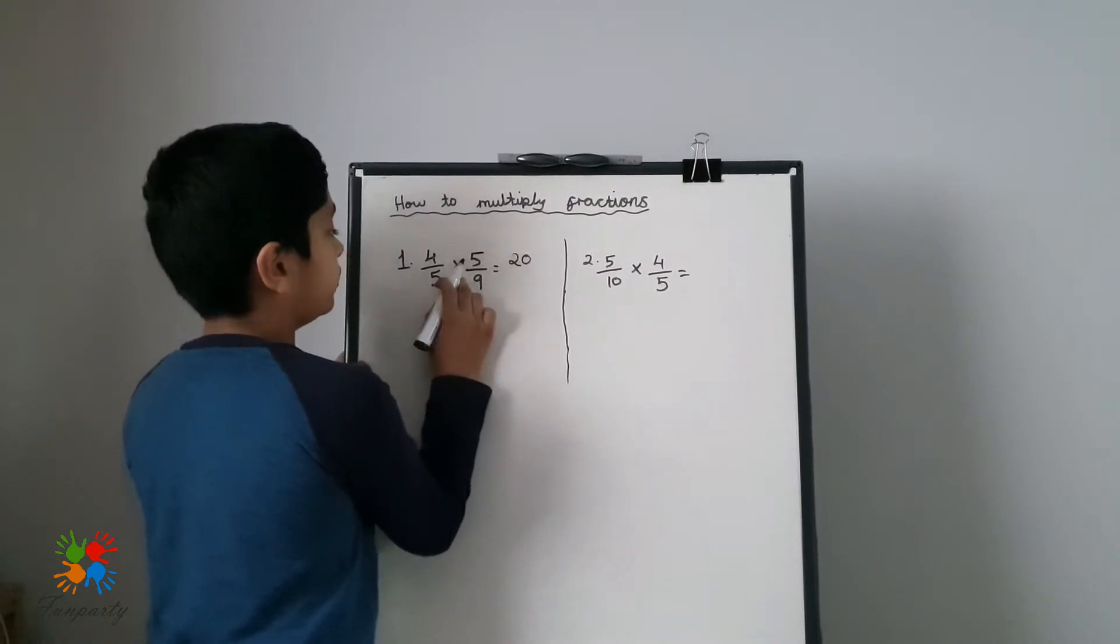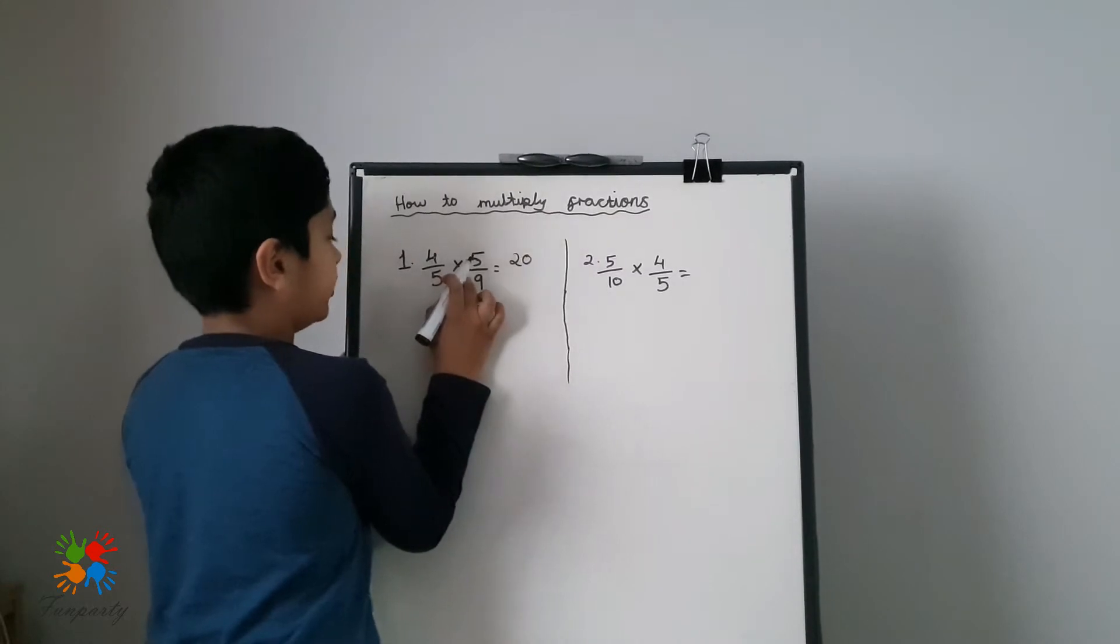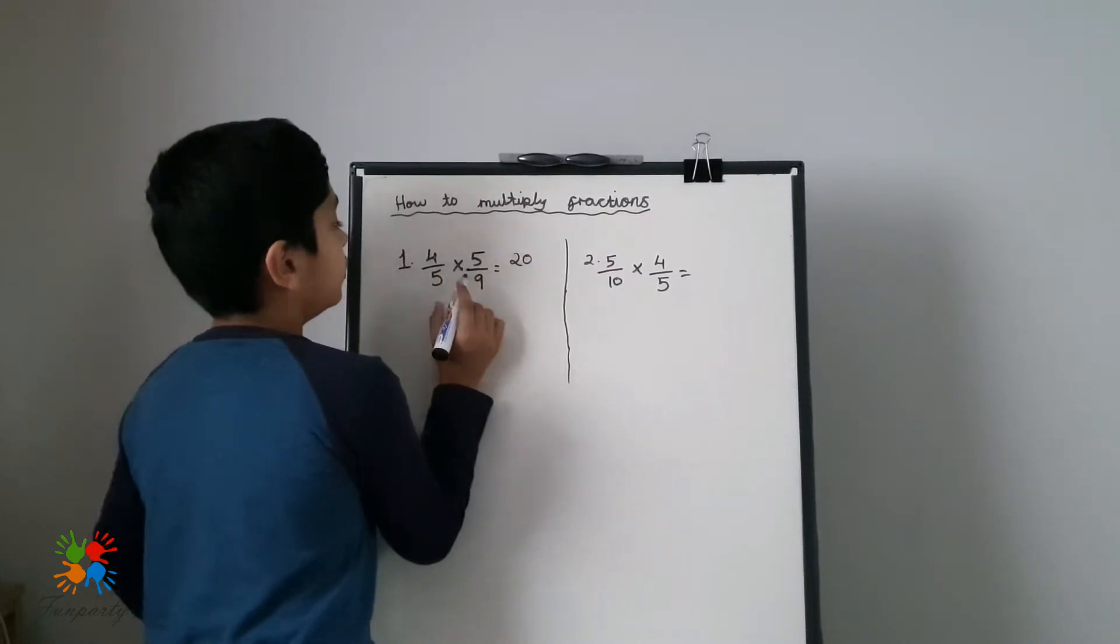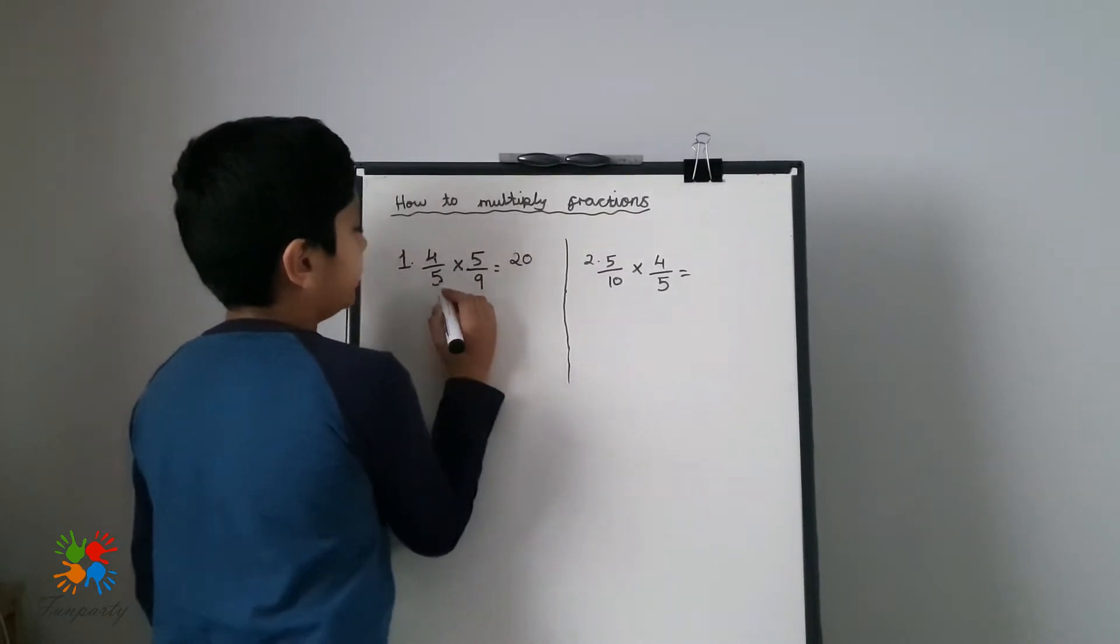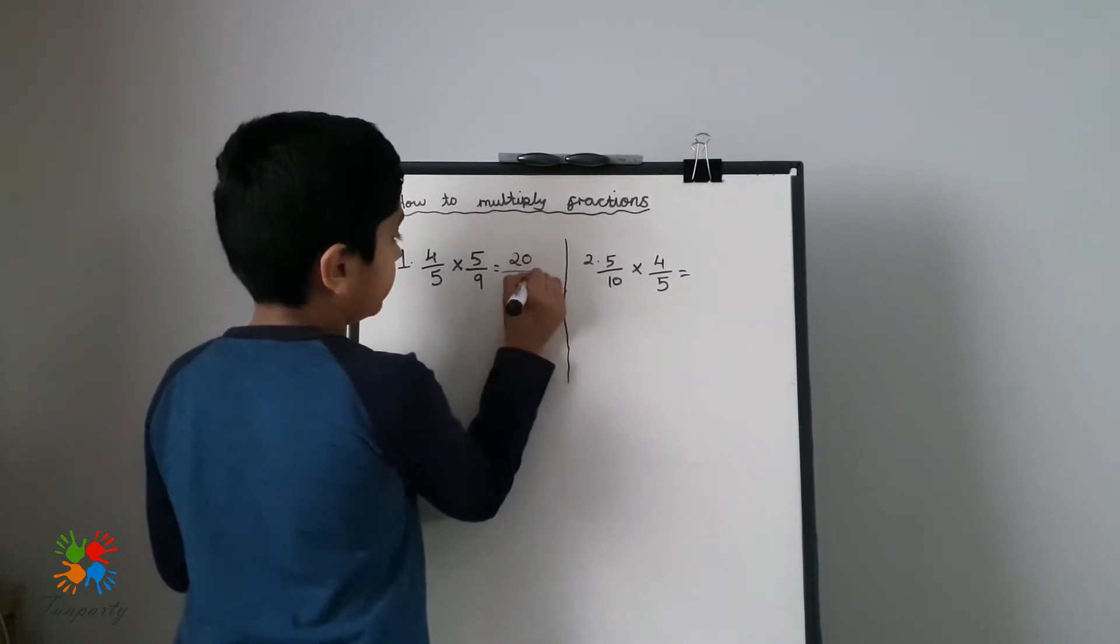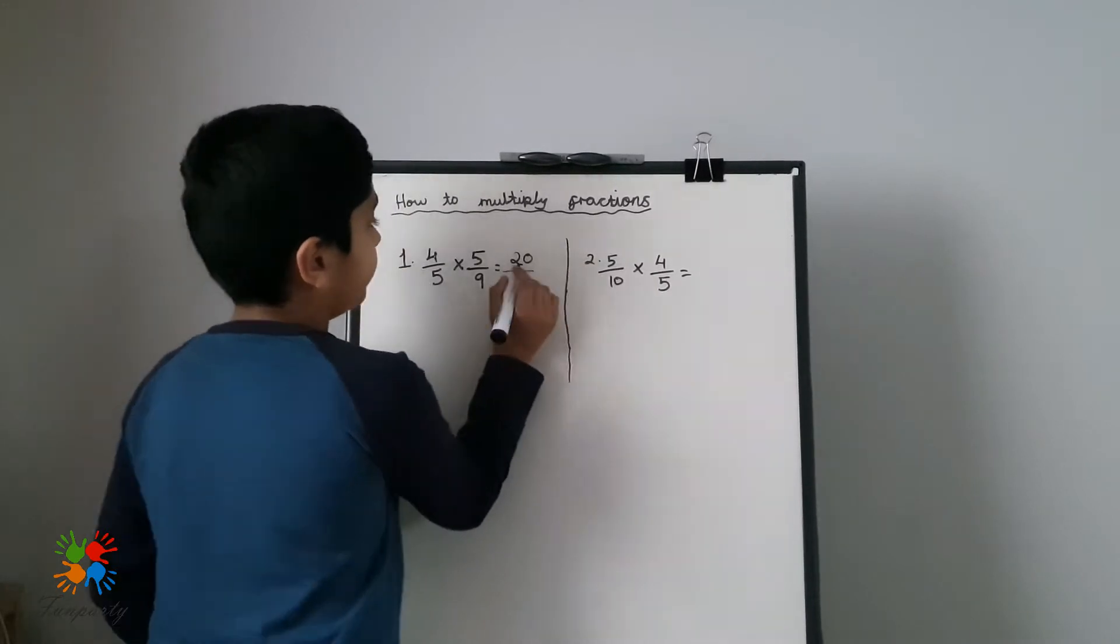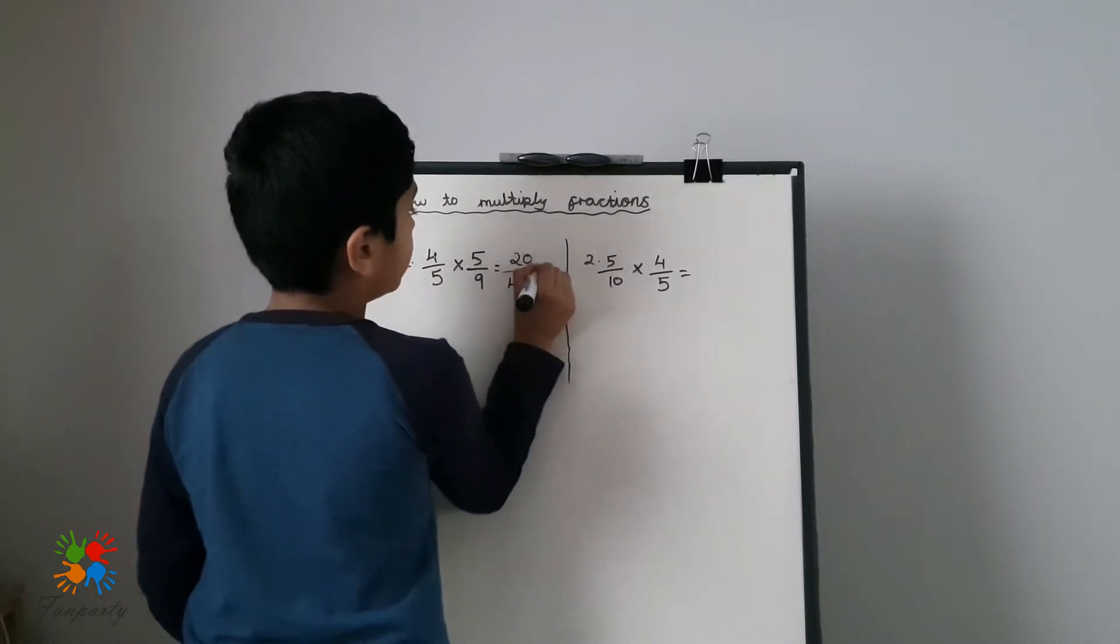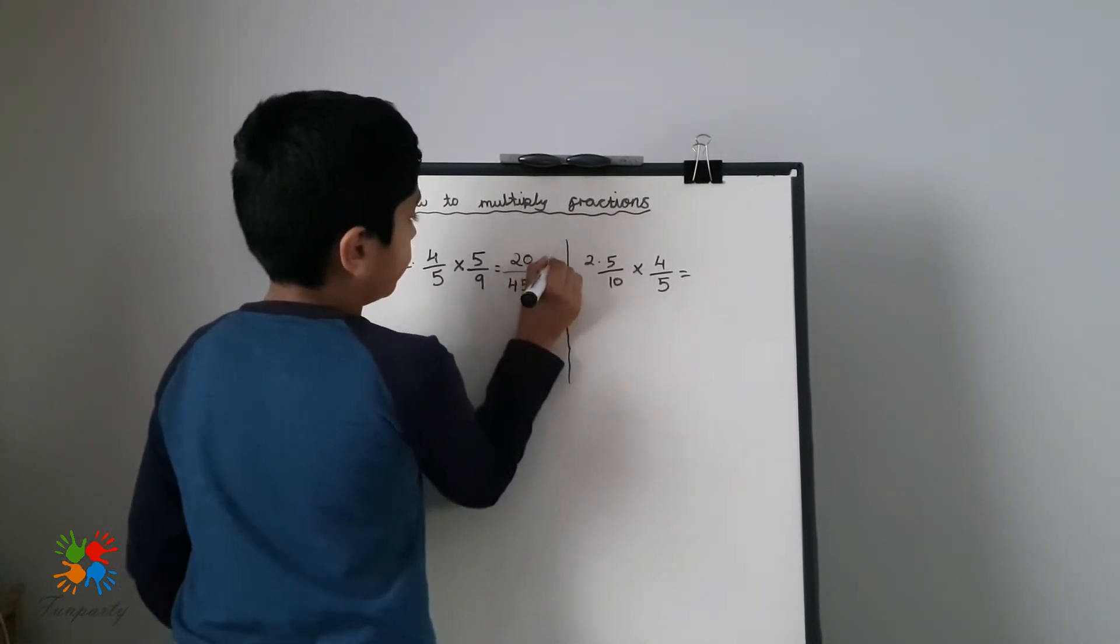Next, look at the denominator. This time we don't have to leave it as it is because these are different. Instead, we can just times 5 times 9, which will give you 45. And if you wanted to simplify it, you will get 4/9.